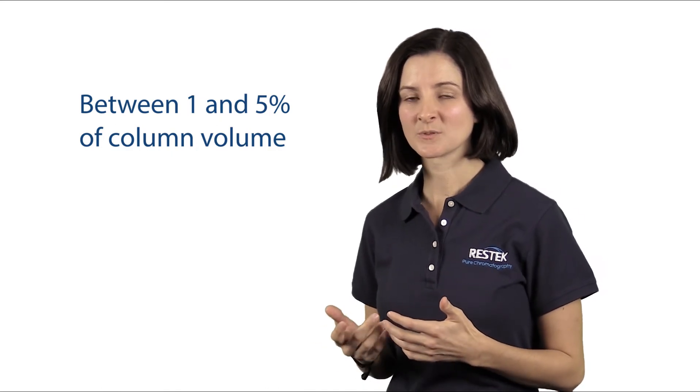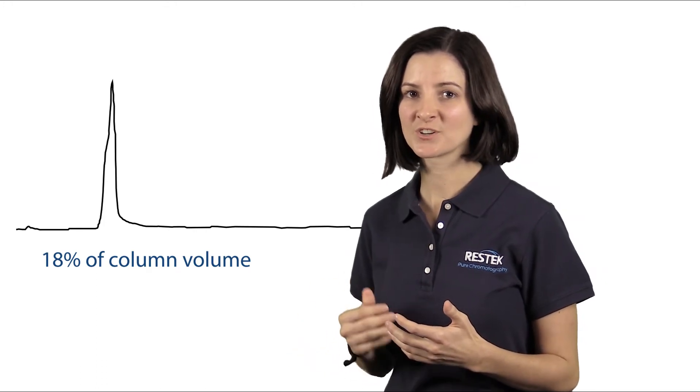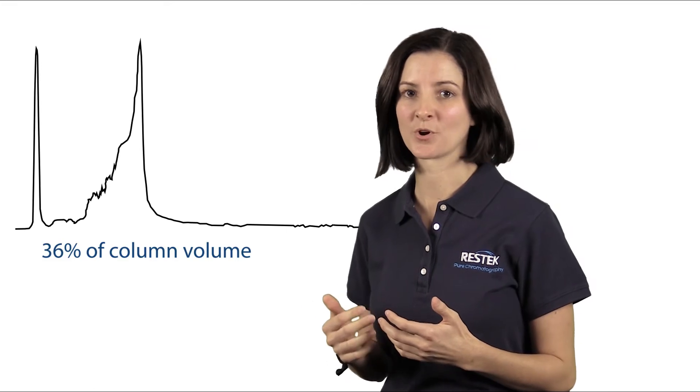When we talk about injection volume, a good rule of thumb is to aim between one and five percent of the total column volume. As we start to exceed that five percent, we'll start to see some peak fronting, which is always a very good indicator that we're reaching capacity and starting to overload our column.